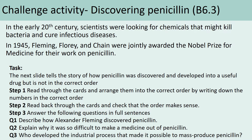We're going to move on to the discovery of penicillin. It wasn't until 1945 that we were able to mass produce it. Before that, many people died from bacterial infections — it was a very important discovery that saved many lives. In the early 20th century, scientists were looking for chemicals that could kill bacteria and cure infectious diseases. The people associated with the discovery were given a Nobel Prize for medicine. You've probably heard of Alexander Fleming, but there was also Florey and Chain in the USA who were involved in its production.